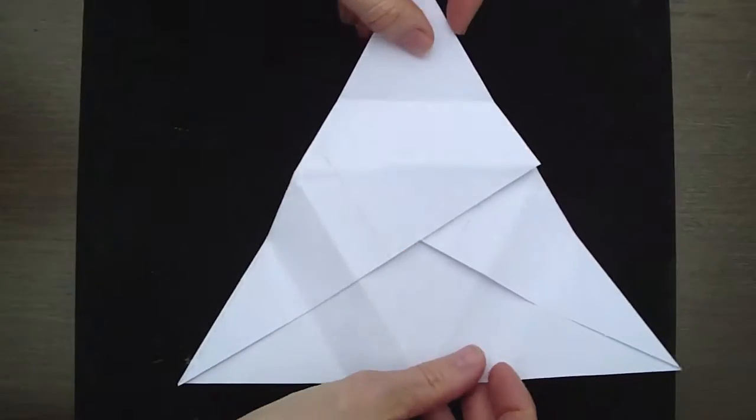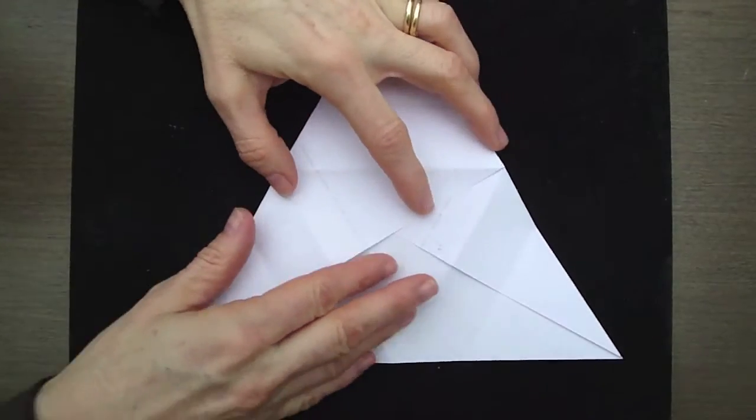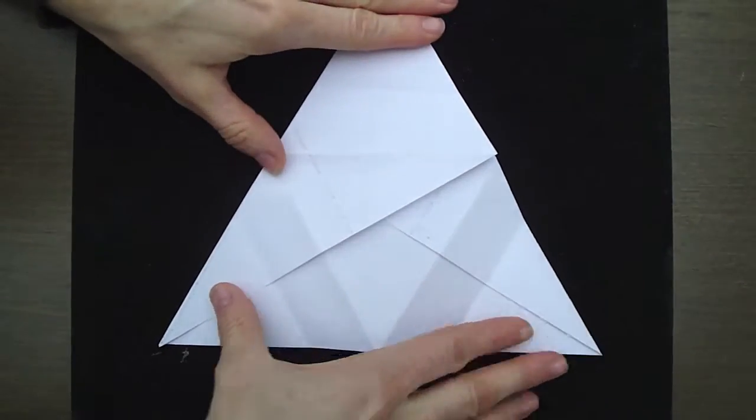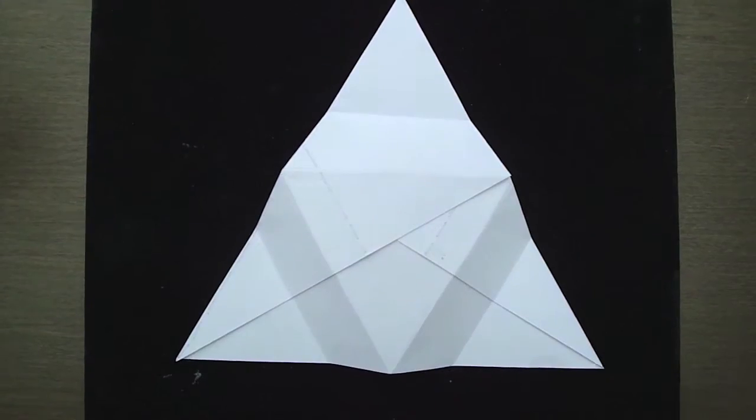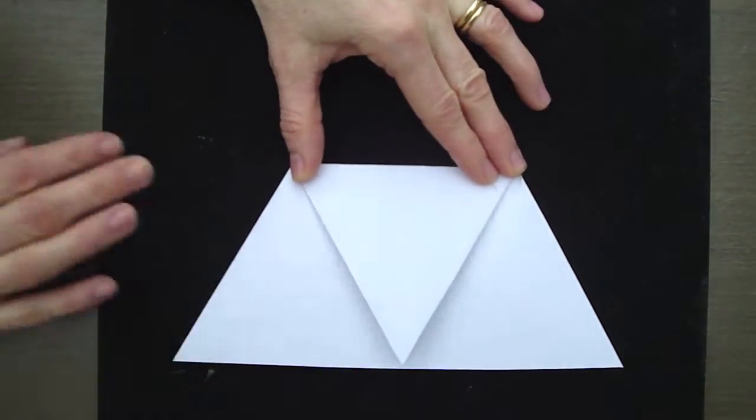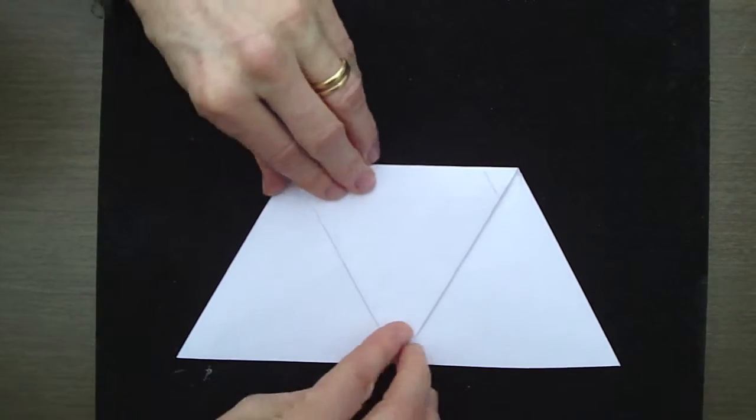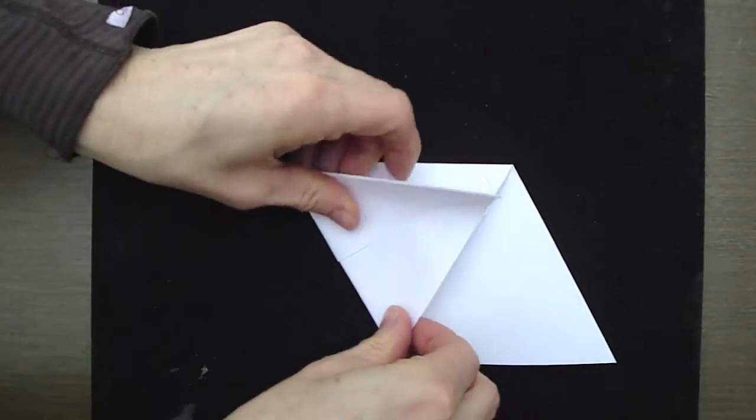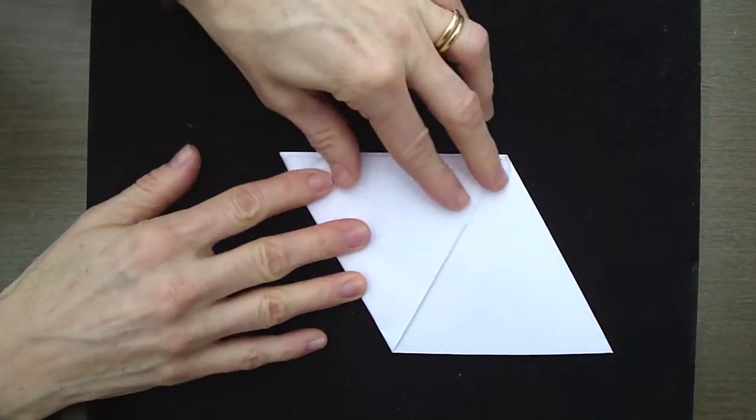Now turn the star over once again. Take the top point and fold it down until it meets the bottom edge. Then take the bottom left hand point and fold it across the top one.